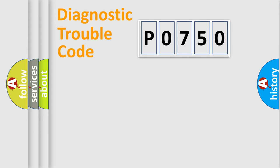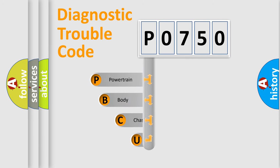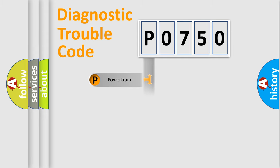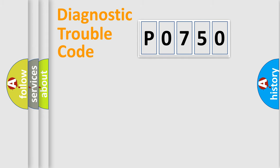Let's do this. First, let's look at the history of diagnostic fault code composition according to the OBD2 protocol, which is unified for all automakers since 2000. We divide the electric system of an automobile into four basic units: Powertrain, Body, Chassis, and Network.